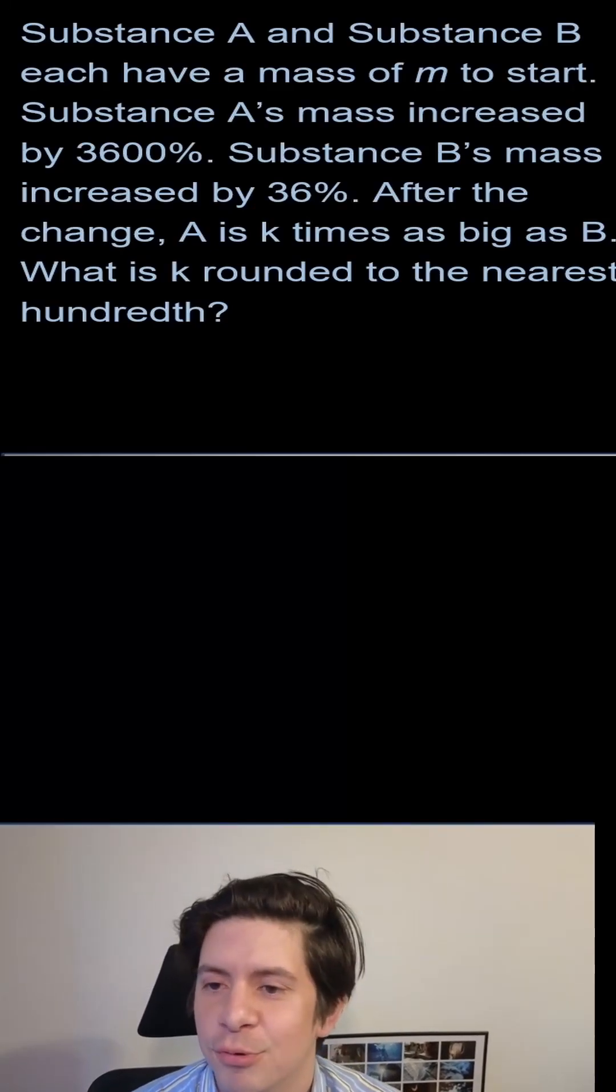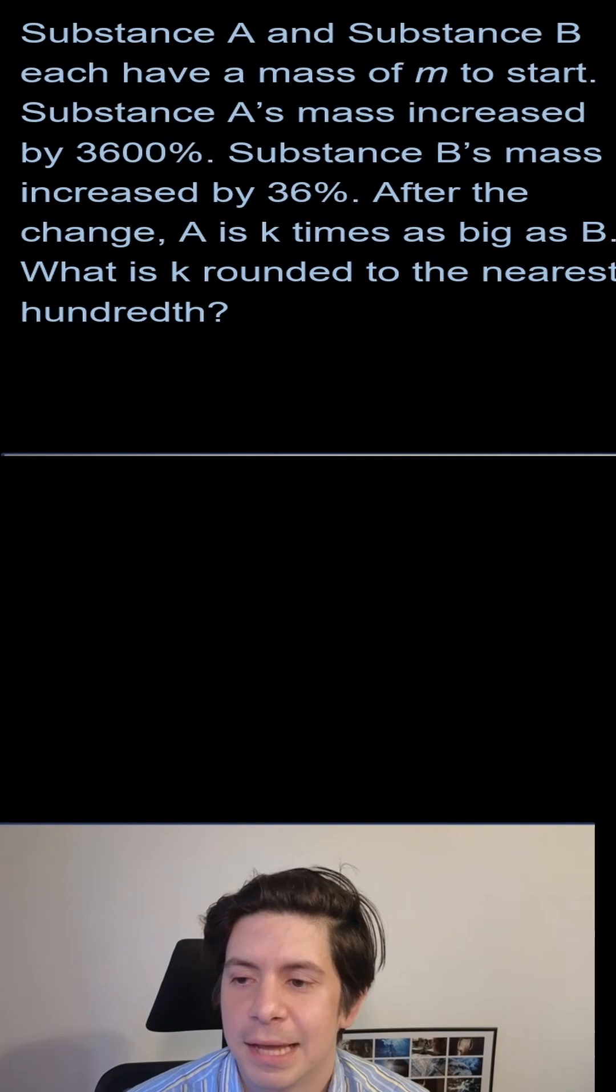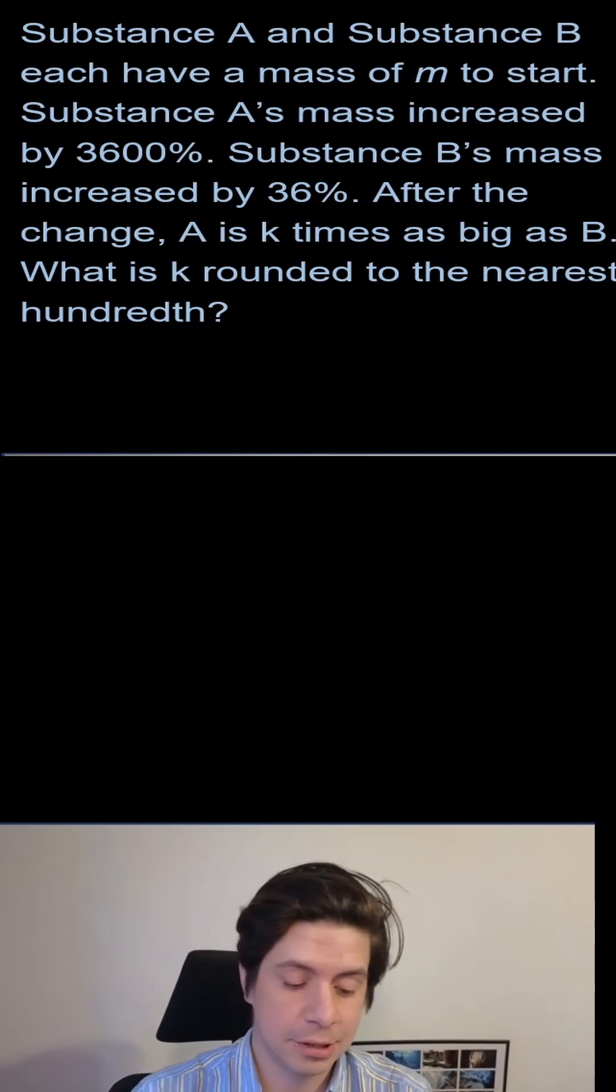All right, this is a fun one for me. I love this type of question. Substance A and substance B each have a mass of m to start. Substance A's mass increased by 3600%. Substance B's mass increased by 36%. After the change, A is k times as big as B. What is k rounded to the nearest hundredth?